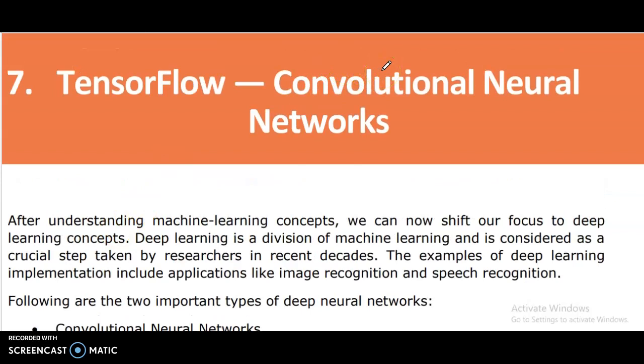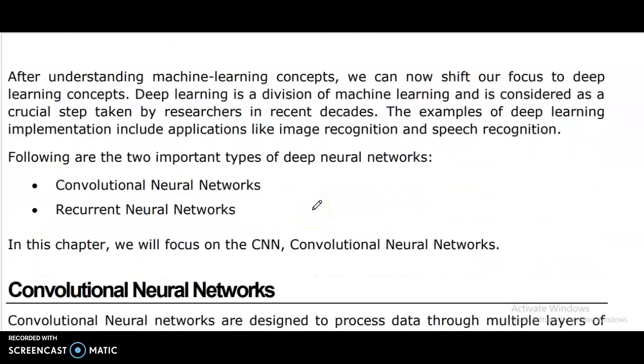TensorFlow Convolutional Neural Networks. After understanding machine learning concepts, we can now shift our focus to deep learning concepts. This defines a deviation of machine learning and is considered as a crucial step taken by researchers. The examples of deep learning communication include operations like image recognition and speech recognition.